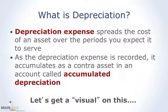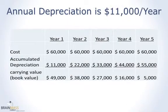Let's get a general visual on how this looks. Let's say we have an asset that we need to depreciate $11,000 each year — we've already computed it, we'll get to that in a minute. Watch the accumulated depreciation account. Year one, there's the first year: $11,000 of depreciation.